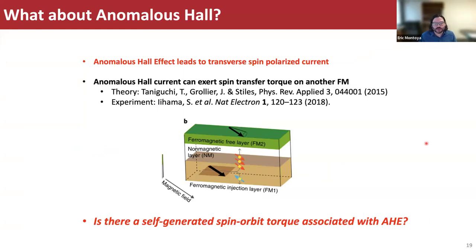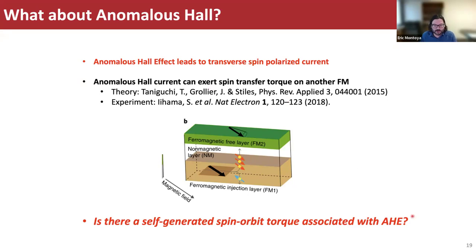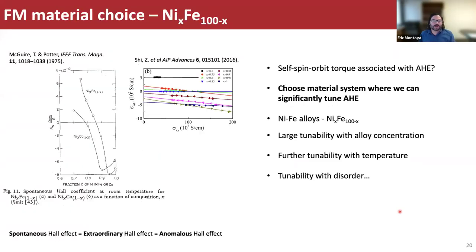The spin hall effect leads to transverse spin-polarized currents. The planar hall effect also leads to transverse spin-polarized currents. When these go across an FM interface, they can lead to torques. So the question is: can the anomalous hall effect lead to a torque? The anomalous hall effect is known to lead to transverse spin hall currents, and it's been theoretically predicted that the anomalous hall current can exert a spin transfer torque on another ferromagnet, which was later experimentally realized. But we are asking: is there a self-generated spin orbit torque associated with the anomalous hall effect?